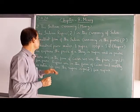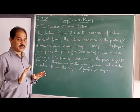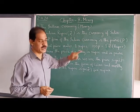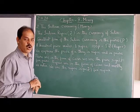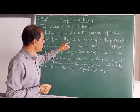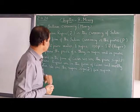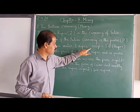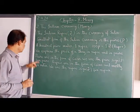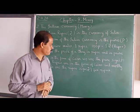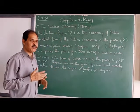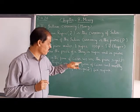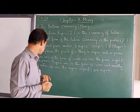Now, students, number 2: the Indian currency. The Indian rupee is the currency of India. The small form of the Indian currency is the paisa, written as 'P'. A hundred paisa makes one rupee. We express the price of a thing in rupees and paisa.